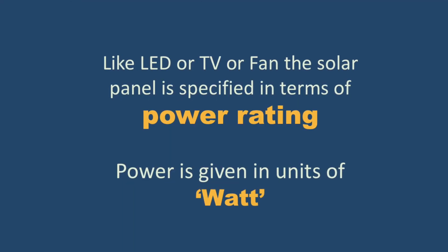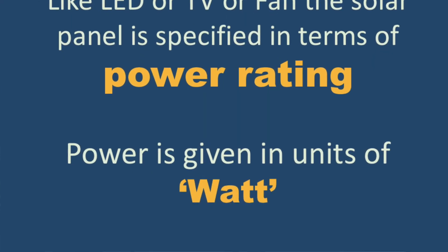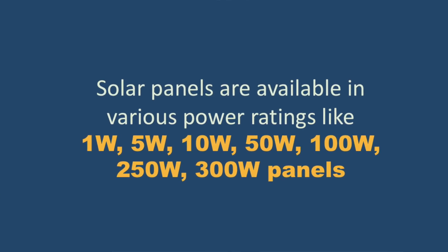How do we specify a solar panel? Just like we specify an LED, TV, or washing machine in terms of its power rating, we specify a solar panel in terms of its power rating as well. The unit of power is watt (W-A-T-T), and solar panels are specified in watts. In the market, solar panels are available in ratings such as 3 watt, 10 watt, 100 watt, 200 watt, 250 watt, 300 watt, and even larger panels are available today.